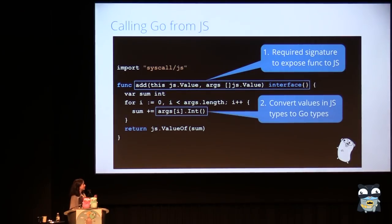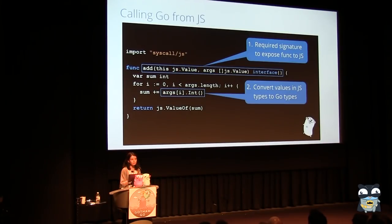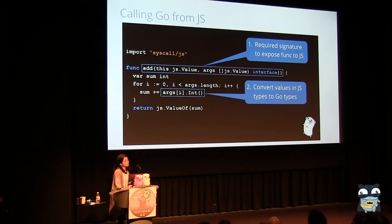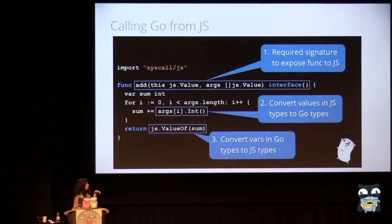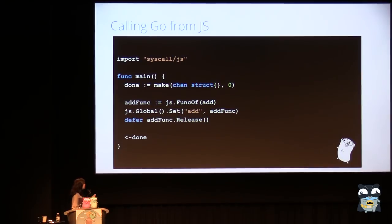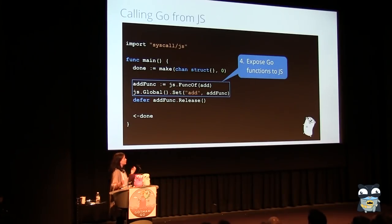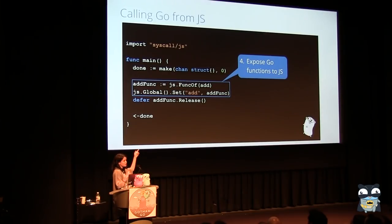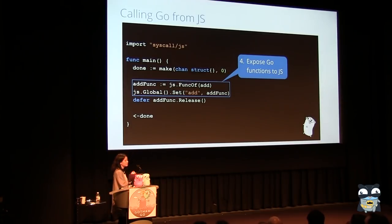Now that we have an array of JavaScript numbers passed in, we iterate through that array and convert all of those elements — which are JavaScript numbers — into Go integers, so we can actually apply Go methods to them. Once I've iterated through all of the numbers, turned them into ints and summed them, I return that sum — but I make sure to call valueOf beforehand to ensure that the sum I'm returning to JavaScript is in a JavaScript type and not left in a Go type. funcOf is the wrapper function I mentioned earlier that converts your return type from add into a JavaScript type for you.